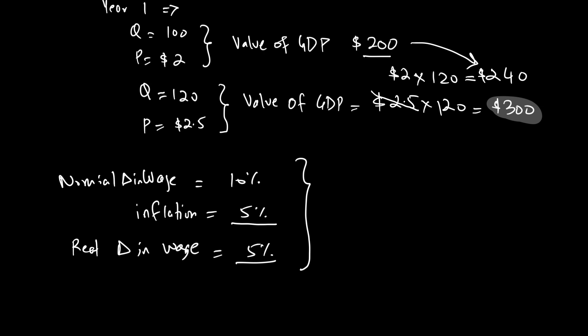The usefulness of the inflation rate is that it can convert any nominal measure into a real measure. That's why finding the inflation rate is an important goal for any government — so we can convert nominal measurements, whether wages, interest, or any income, into real values to find out the actual rise in purchasing power or real income.